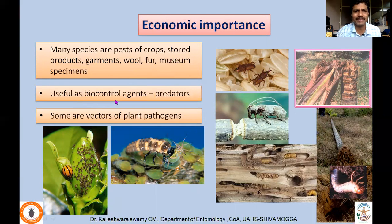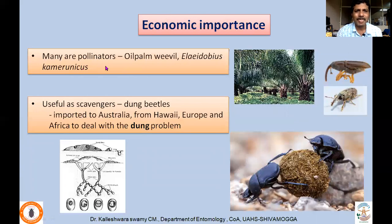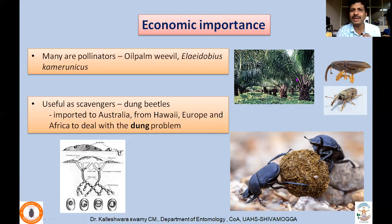However, few of them are beneficial as biocontrol agents — they feed on pest insects, thereby reducing damage to our crops. Some insects like ladybird beetles — both the adult and the grub — feed on our pests and lead to reduction in pest damage in cropping ecosystems. Few of them even act as vectors of plant pathogens. Few species are pollinators; for example, the oil palm weevil Elaeidobius kamerunicus. Without this curculionid weevil, pollination will not take place in oil palm — so its presence is very important for increasing yield.